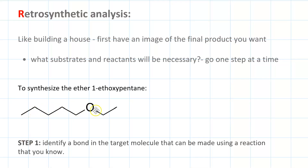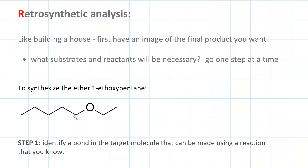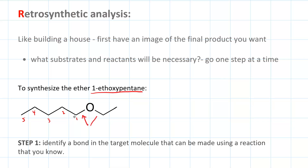So let's synthesize this molecule. This is an ether. Its longest carbon chain has one, two, three, four, five carbons, and then there's an ethoxy group on it — so, one-ethoxypentane. We know how to make that bond through SN2 attack.